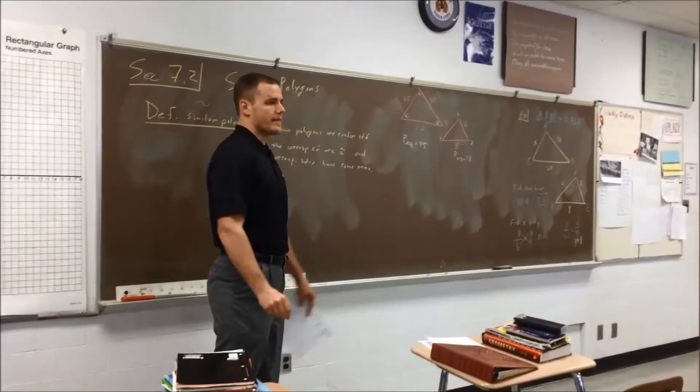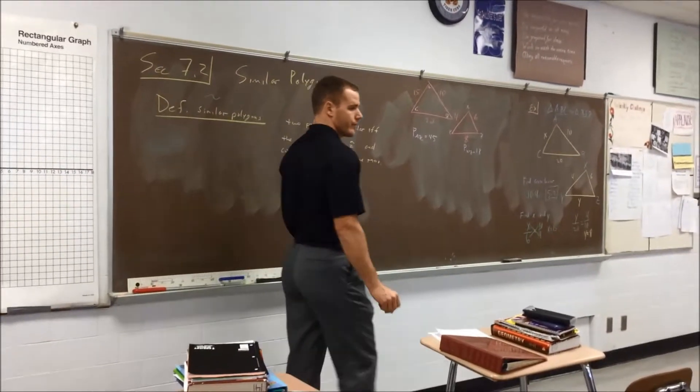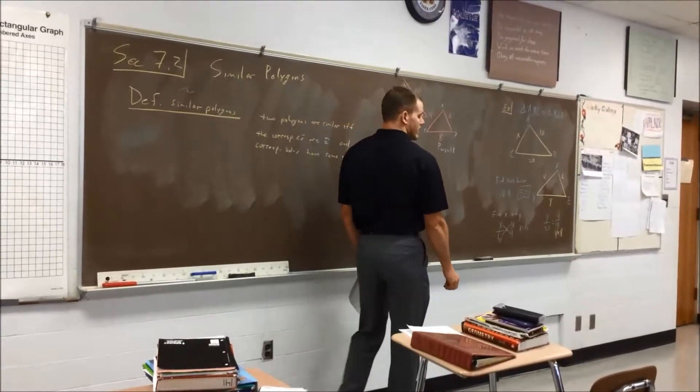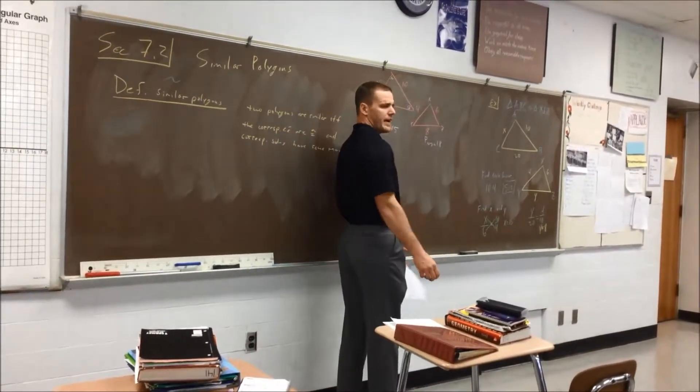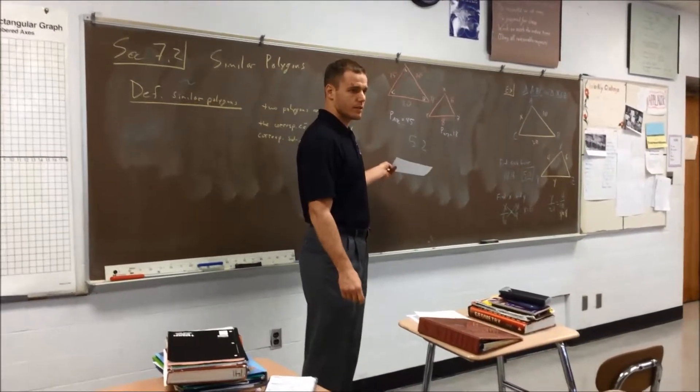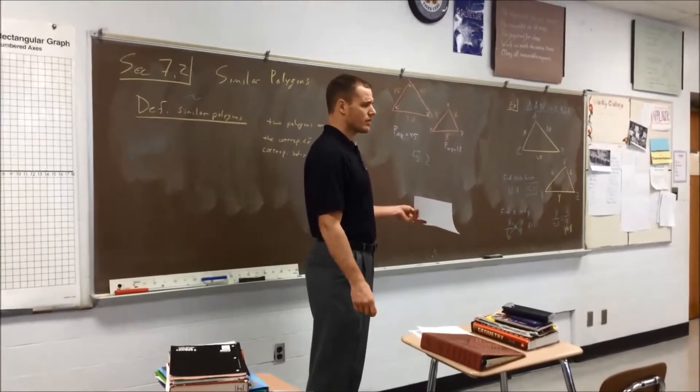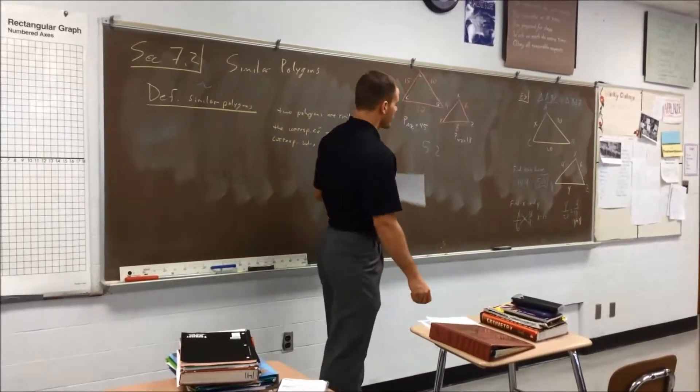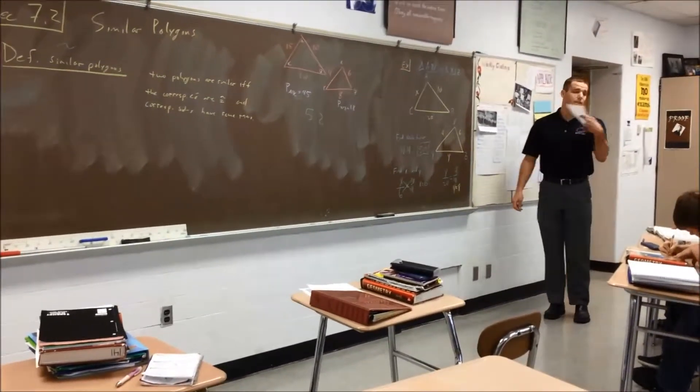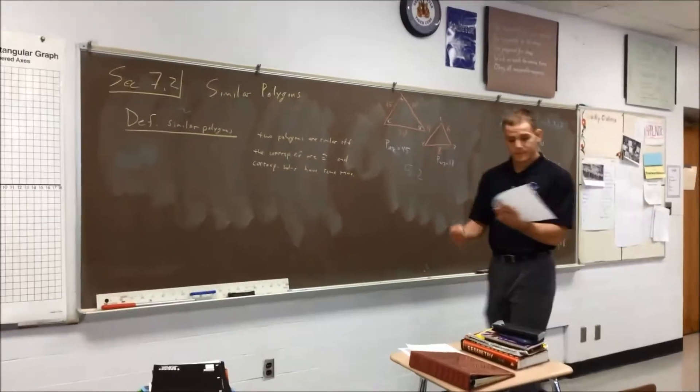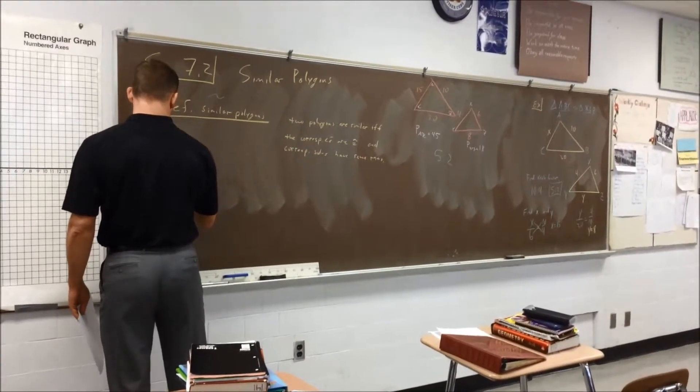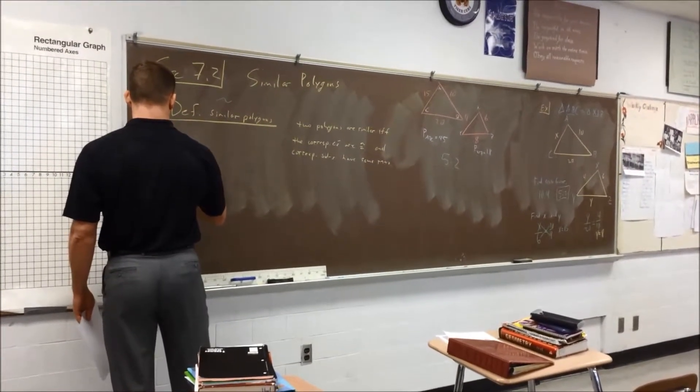The perimeter of XYZ is equal to 18. Let's reduce that to 5 to 2. So the scale factor for the perimeters is the same as the scale factor for the sides. Would that make sense? Of course it would. The scale factor for the perimeter is the exact same as the scale factor for the sides.